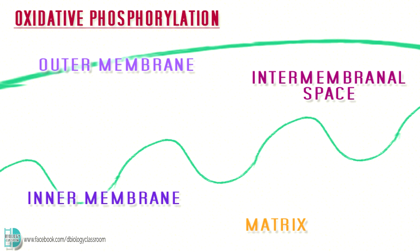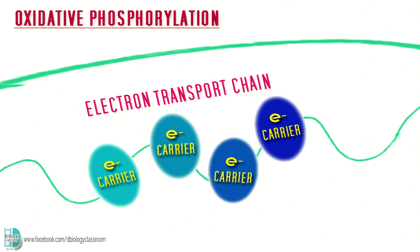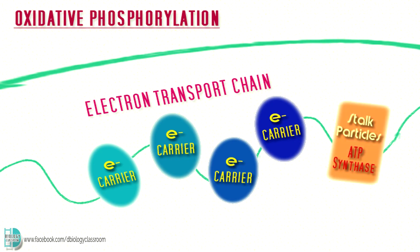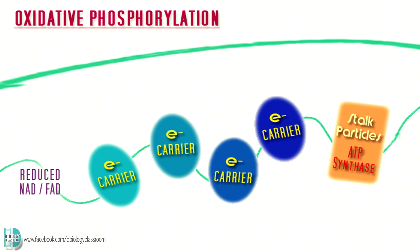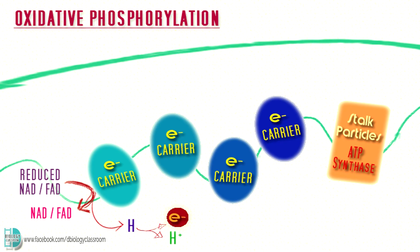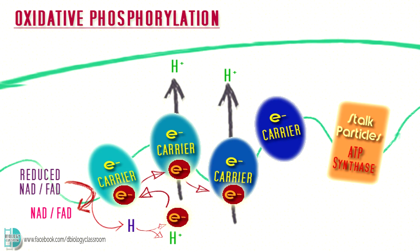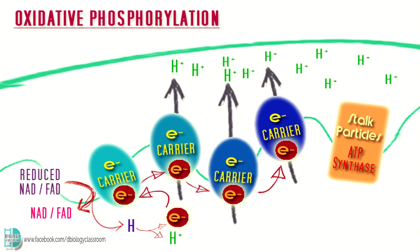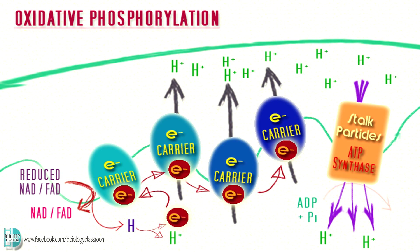Oxidative phosphorylation also occurs in the mitochondrion. The electron transport chain, made up of several electron carriers, and stalked particles containing ATP synthase, are found on the inner membrane of the mitochondrion. Reduced NAD and reduced FAD formed in the previous stages arrive at the inner membrane, where they are oxidized and hydrogen is released. Hydrogen splits into protons and electrons. The electrons pass along the carriers, and the energy released is used by the protein carriers to pump protons into the intermembranous space, creating a proton gradient. Due to the gradient, protons tend to re-enter the matrix, but the only passage available is through ATP synthase. When protons pass through ATP synthase, ATP is produced.